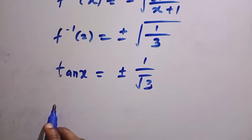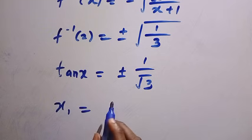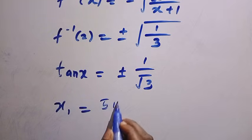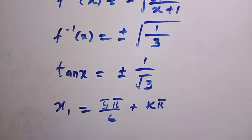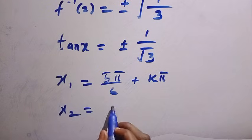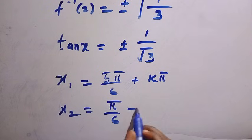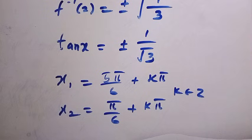Taking the inverse tangent of both sides, just as we found above, x₁ = 5π/6 + kπ, and x₂ = π/6 + kπ, where k is a member of the integers. This is how to solve this problem using the inverse method. Thanks for watching and see you in the next video. Never stop learning. Bye-bye.